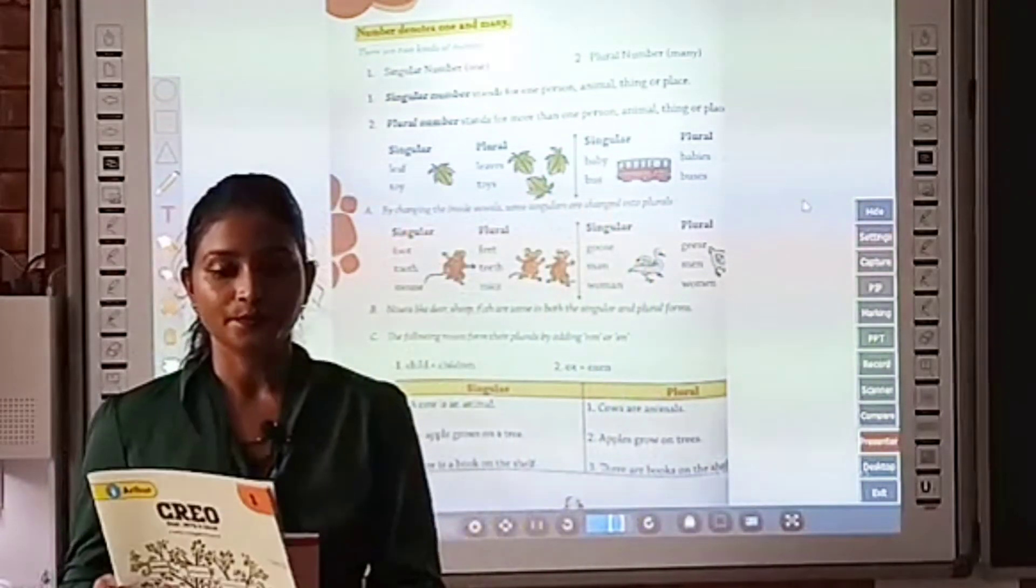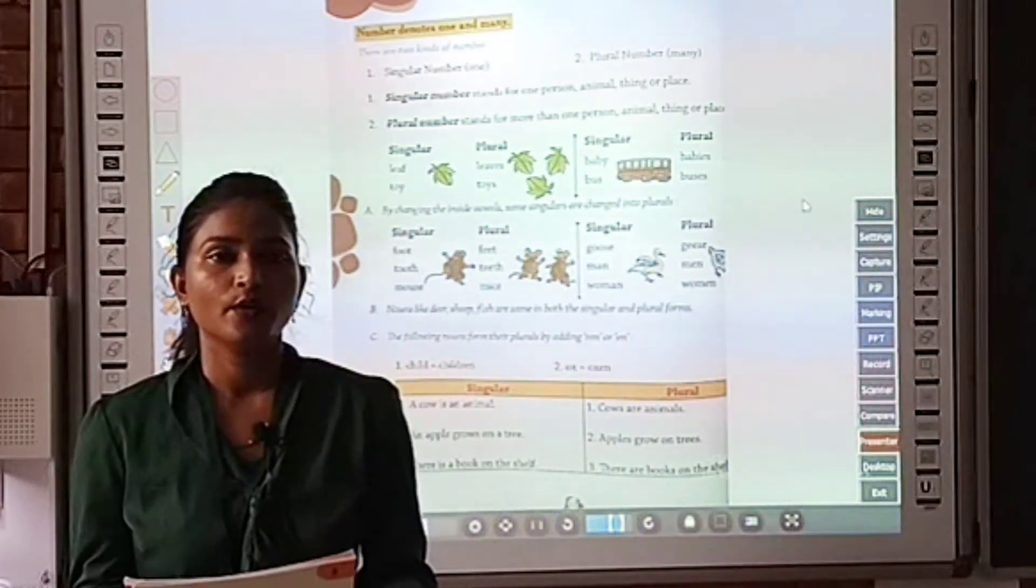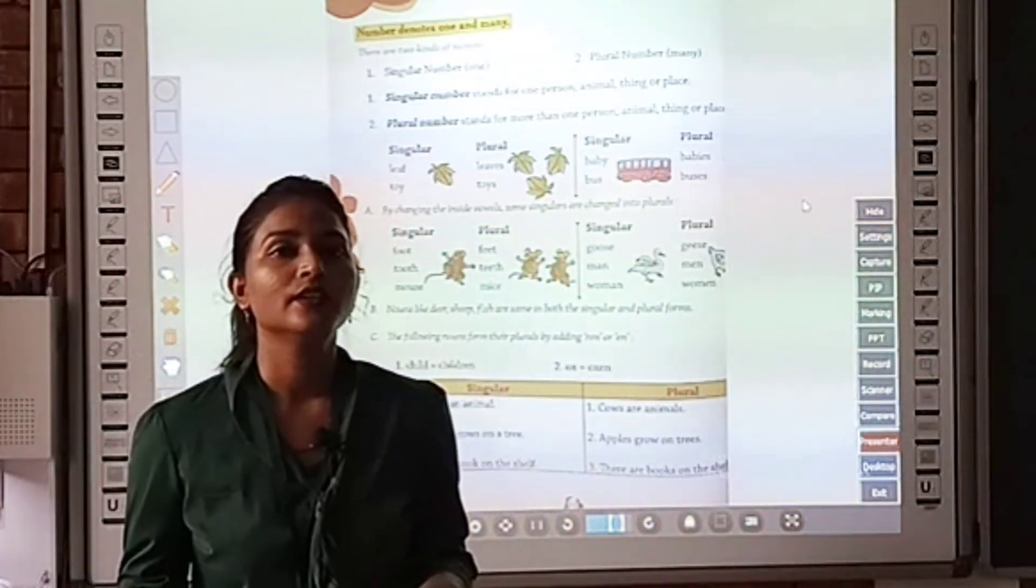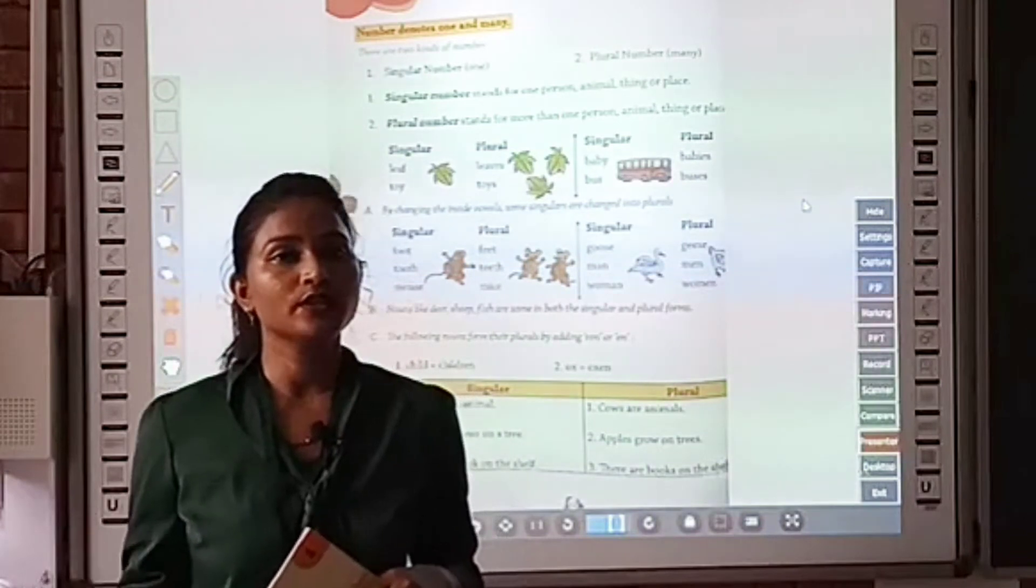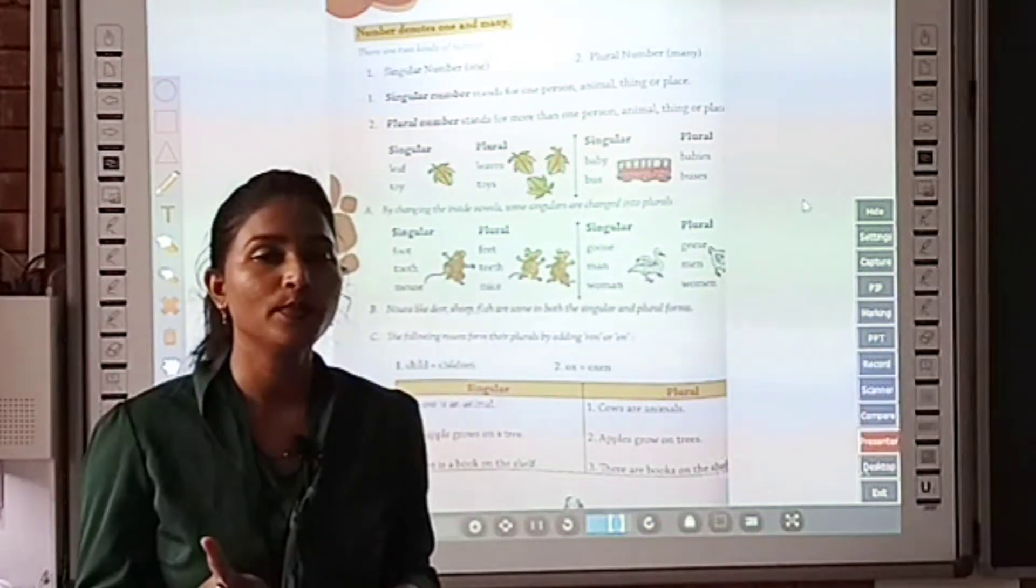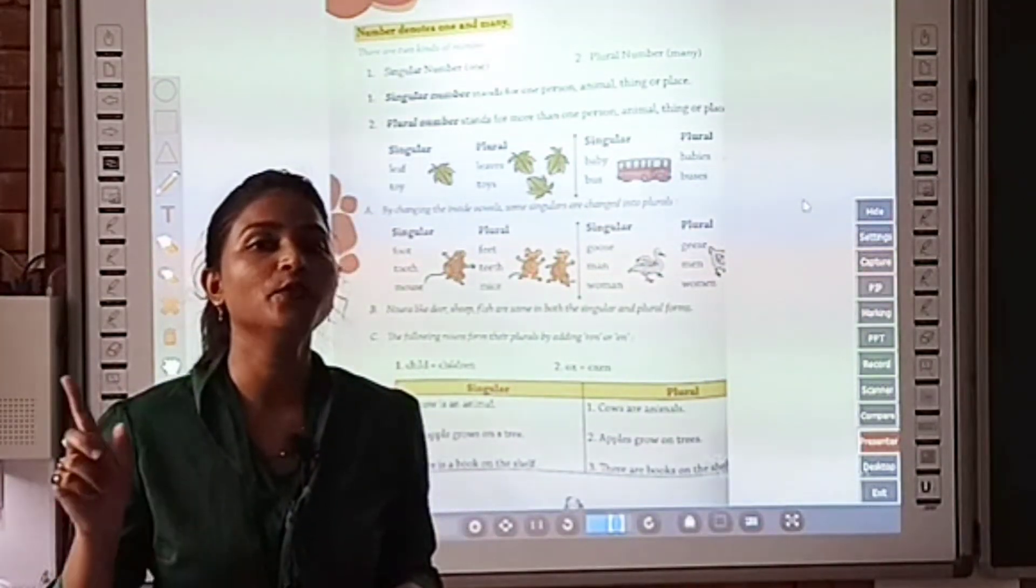So children, now what do you understand by this? Singular noun shows one person, one place, one animal and one thing.